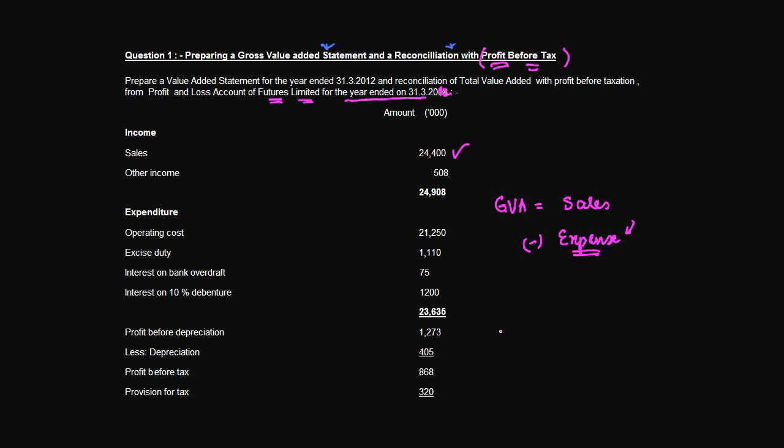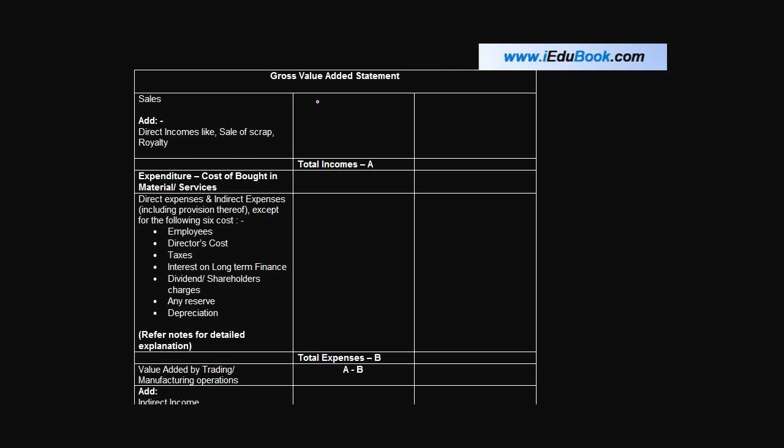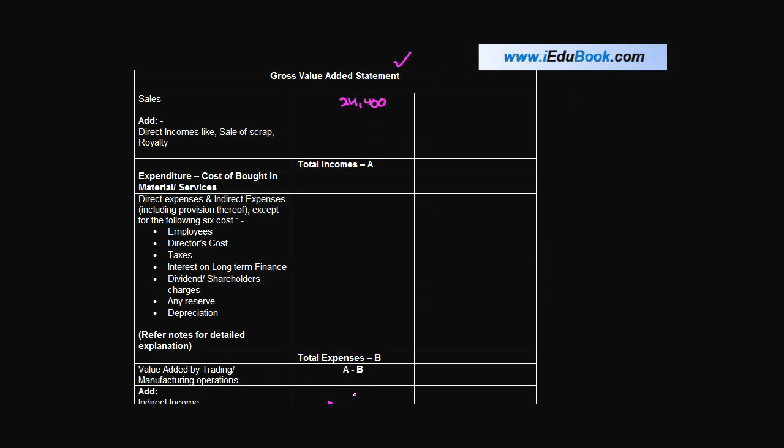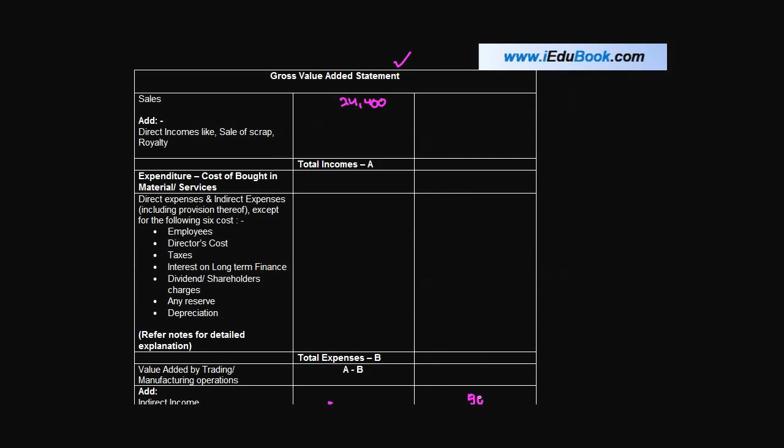Your Sales are 24400 and you are told that Sales represent Value of Goods Supplied after deducting discount, returns, and Sales Tax. We will add the number of Sales over here which is 24400. This is the Draft of the Statement or the Format which we had given you. Then you have Other Income. Other Income is not considered at the time of calculating the Gross Value because first we need to find out the value added by the Trading Operations. Once you get this, you add the Indirect Income which is your other income in this case, which is 508.